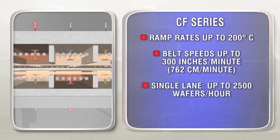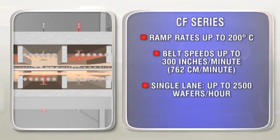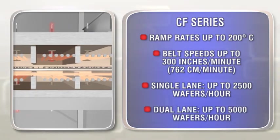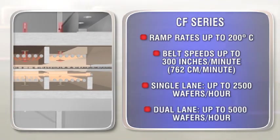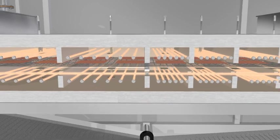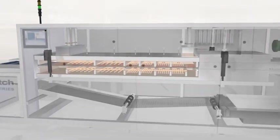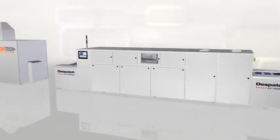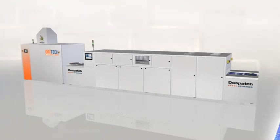The single lane unit is capable of processing up to 2,500 wafers per hour and the dual lane can process up to 5,000. All CF Series drying and firing furnaces are available with optional VOC thermal oxidizers and the new DryTec dryer.